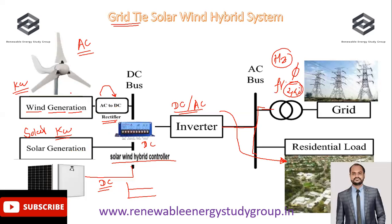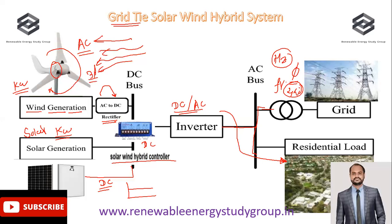At night or during the day, whenever there is sufficient wind supply at a specific height, the wind machine rotates, and the alternator inside the wind machine generates power. This power is generally obtained in three-phase form from the wind machine and is then converted into proper DC supply format. In this way, the grid-tie solar wind hybrid system works effectively for residential, commercial, and utility-scale projects.